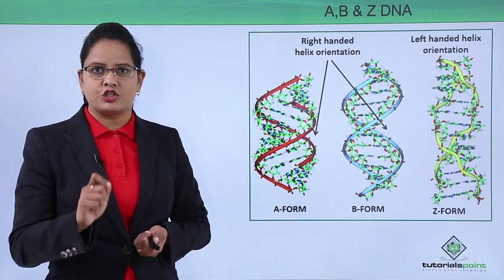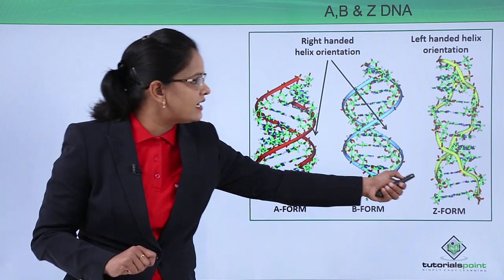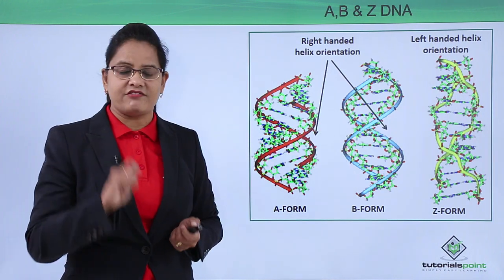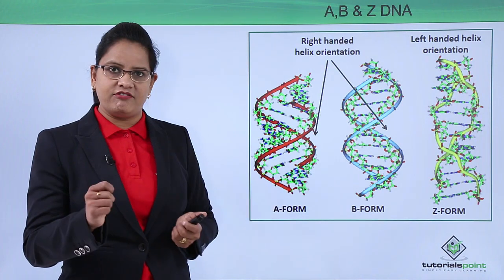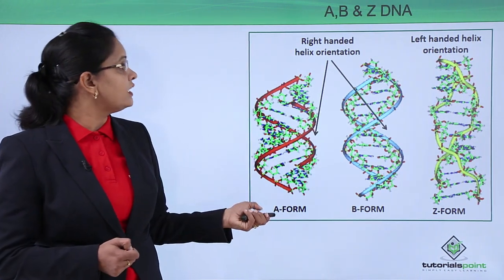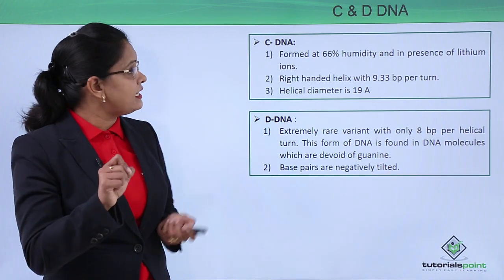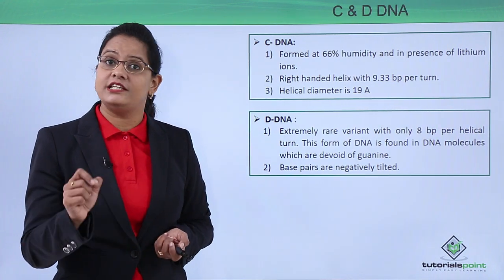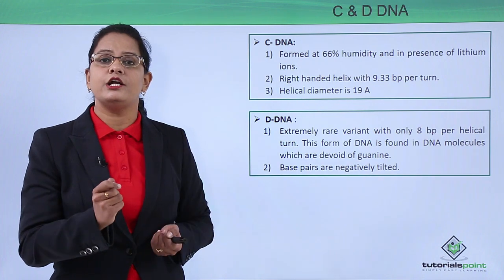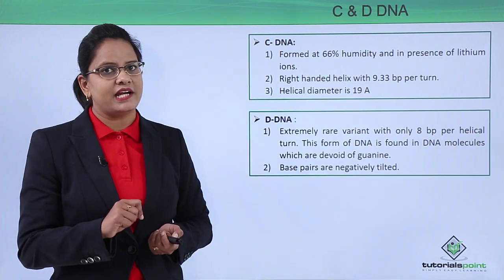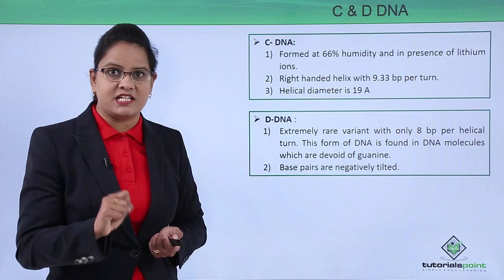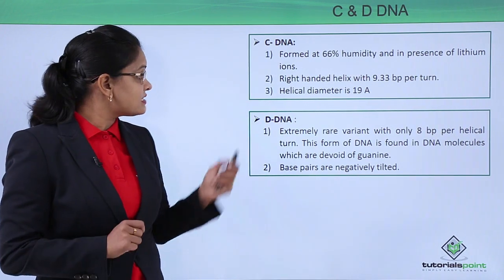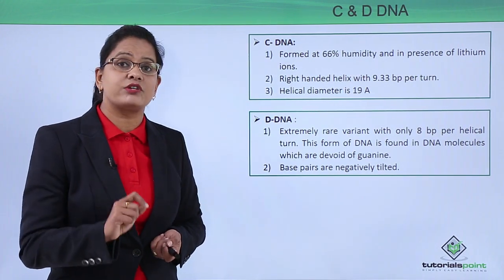Comparing A-DNA, B-DNA, and Z-DNA: A and B have right-handed helix orientation while Z-DNA has a left-handed orientation. The major groove is flatter and the minor groove is deep and narrow in Z-DNA. Next, C-DNA is formed at 66% humidity when lithium ions are present. It is again a right-handed helix with 9.33 base pairs per turn and a helical diameter of 19 Ångströms.